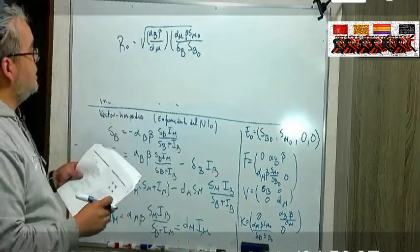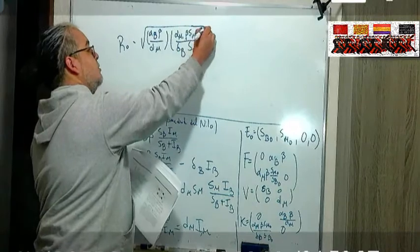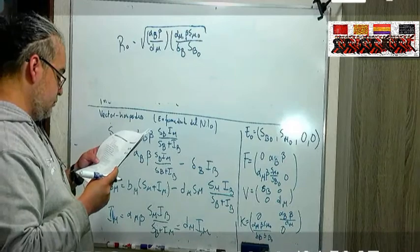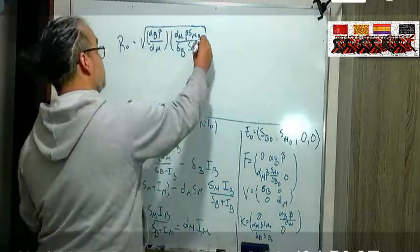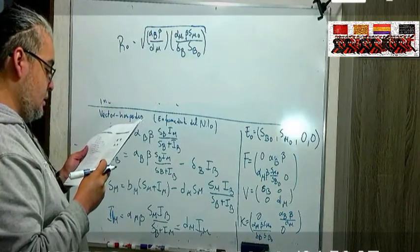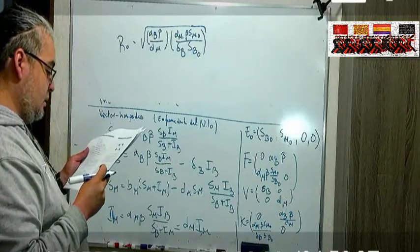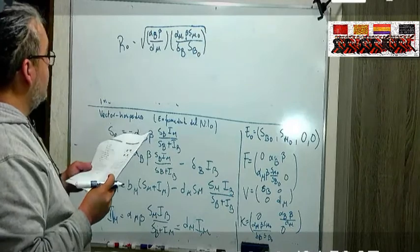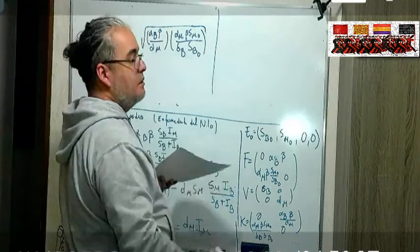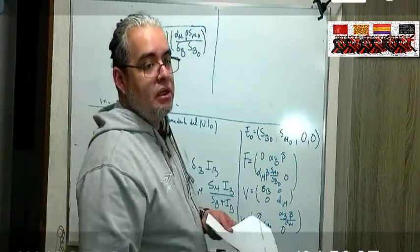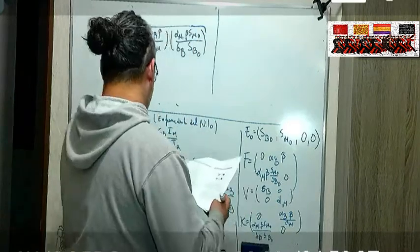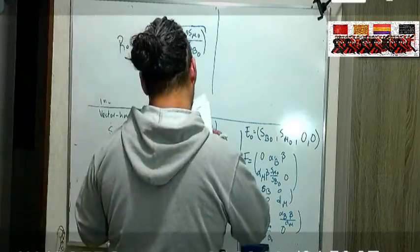Entonces ese es el número reproductivo básico. Ahora qué tan importantes son los parámetros que tenemos aquí, es decir si cambiamos alguno de los parámetros cómo va a afectar al R0, qué tanto nos mueve el umbral.